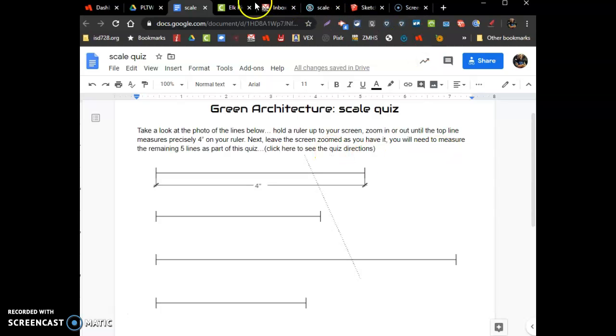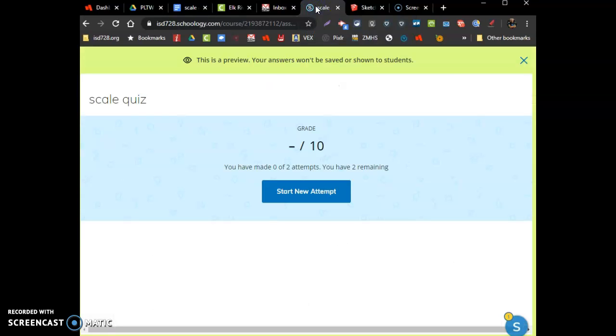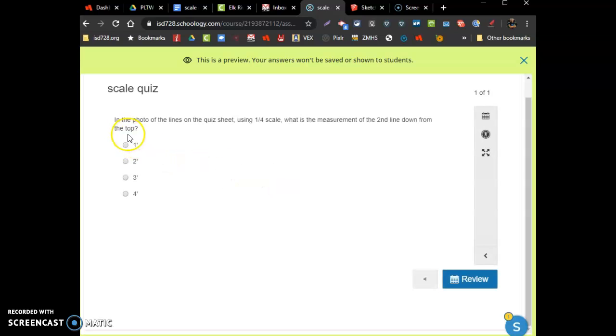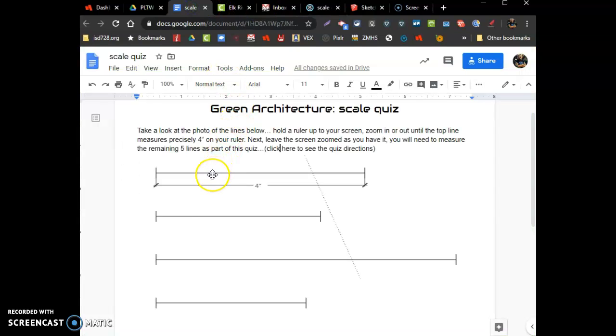That link brings you to, here it is. So we'll do a new attempt. It says in the photo of the lines on the quiz sheet, using a quarter scale, what is the measurement of the second line down from the top? So it's going to refer to the lines in order. Second line down from the top means not this top line, this line. So use your ruler against the screen, and in quarter scale, how long is that line? Measure.